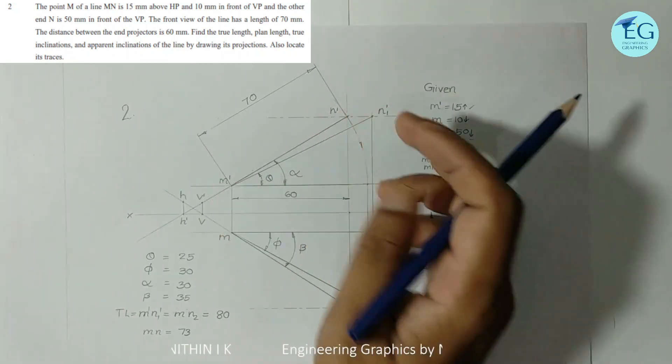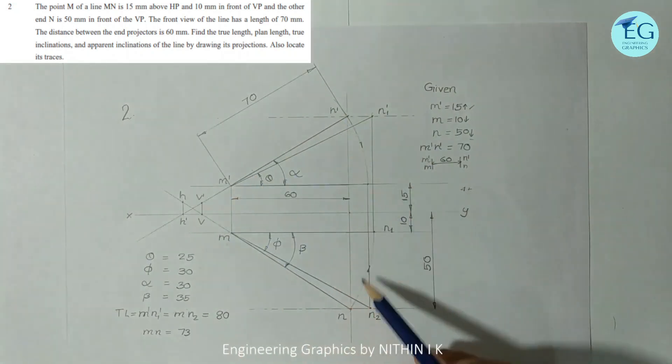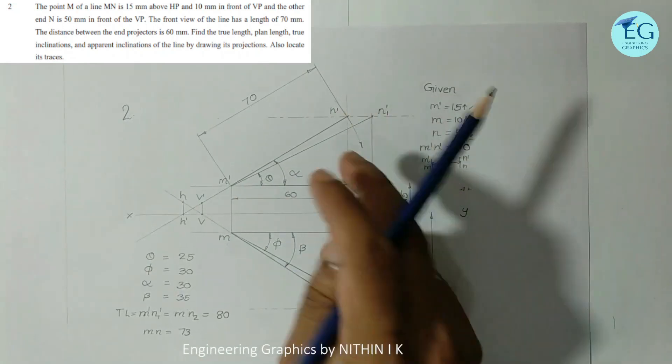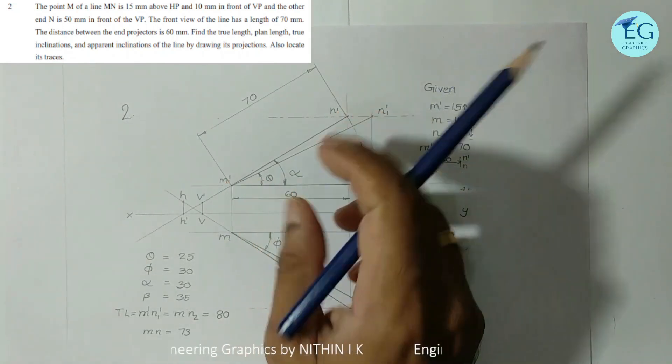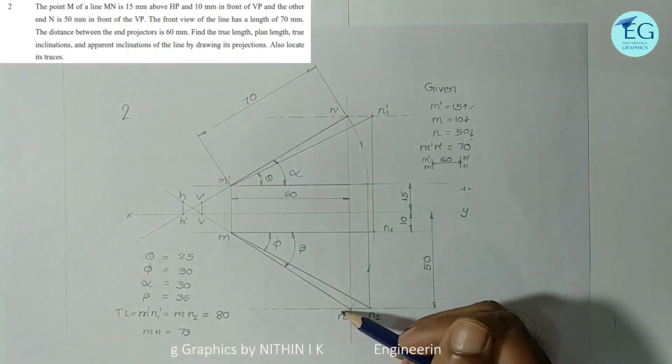Front view length 70 for the front view. M dash and n dash. I will mark 70 in front view.